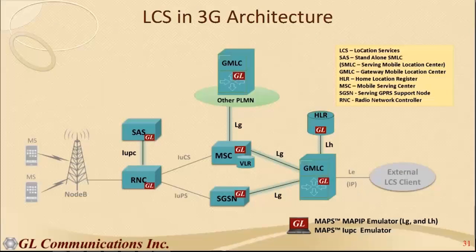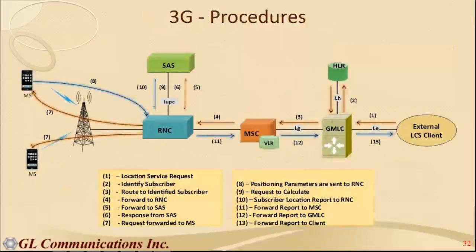For 3G architecture, the nodes are the same as 2G except the RNC replaces BSC on the access network side, communicating with the SAS — Standalone SMLC — which calculates positioning parameters. The network-side interfaces are the same as 2G, but on the access side the RNC communicates with the SAS using the IOPC interface — that is the only difference in the 3G network.